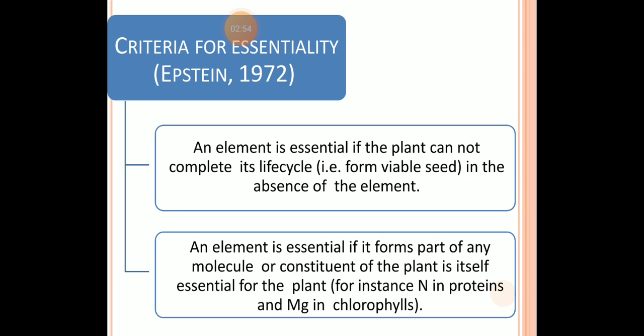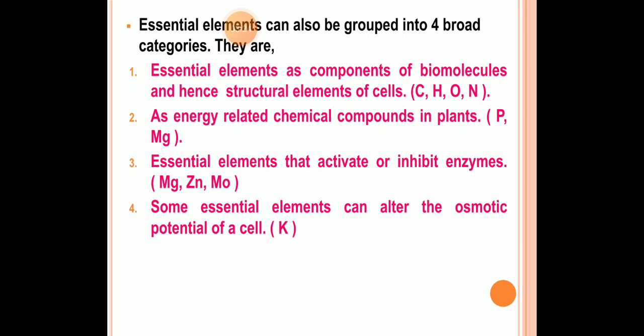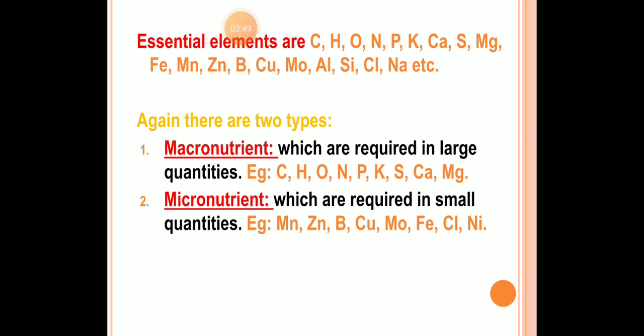For example, in the case of chlorophyll, magnesium is required; for proteins, nitrogen is required — these are referred to as essential elements. The criteria for essentiality include: the element must be directly involved in a metabolic process, it must be absolutely necessary for normal growth and reproduction, and it cannot be replaced by other elements. Essential elements include basic biomolecule components such as carbon, hydrogen, oxygen, nitrogen, phosphorus, magnesium, zinc, and molybdenum.